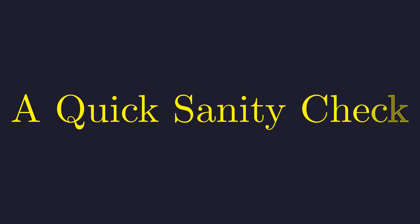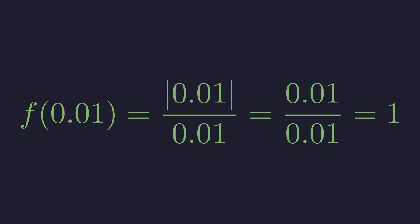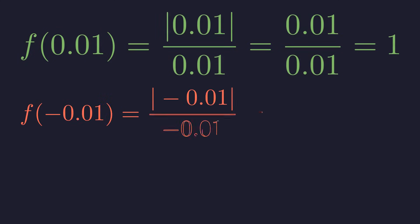Let's test this with actual numbers to confirm our findings. If we pick a number just to the right of zero, like 0.01, the function gives us one, matching our right-hand limit. If we pick a number just to the left, like negative 0.01, the function gives us negative one, matching our left-hand limit.